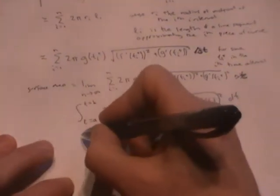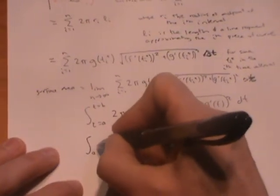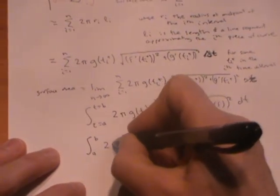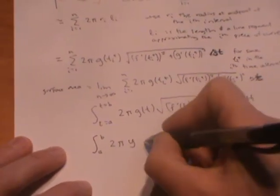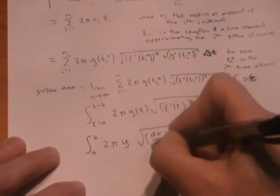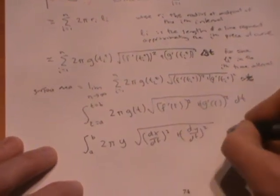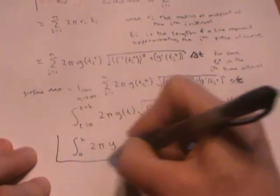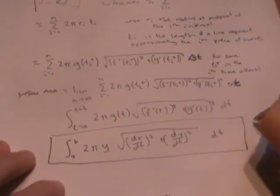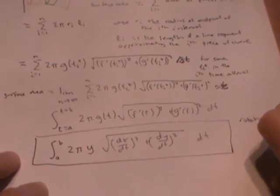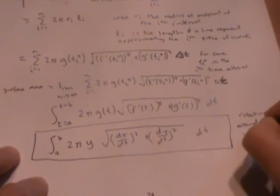Usually, this is written as the integral from a to b of 2πy times the square root of (dx/dt)² plus (dy/dt)² dt. And that's our formula for surface area if we're rotating around the x-axis.